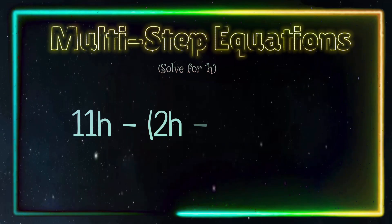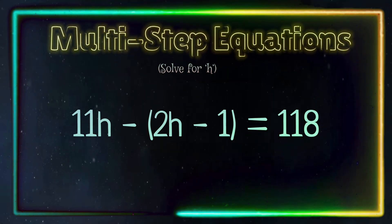In this video we are solving the multi-step equation 11h - (2h - 1) = 118, solving for h.